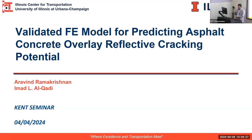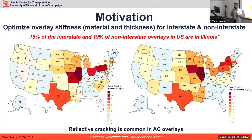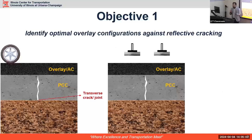Before going into the details, I want to give the overall big motivation for why we did this. The majority of overlays in the US — nearly 15 percent of your interstate and nearly 20 percent of non-interstate overlays — are from the state of Illinois. One of the biggest issues with overlays is reflective cracking. IDOT really wanted us to identify the optimal overlay configuration — thickness and material — that would be resistant to reflective cracking.